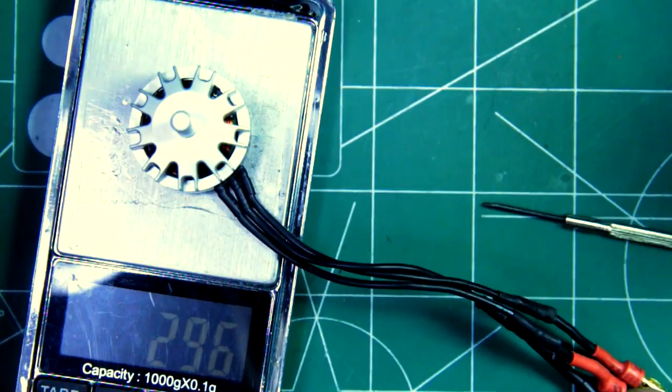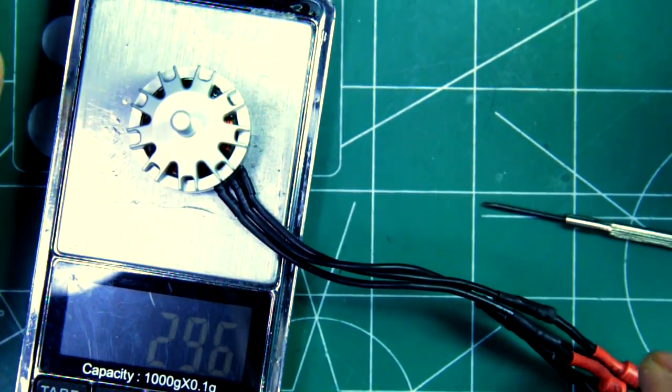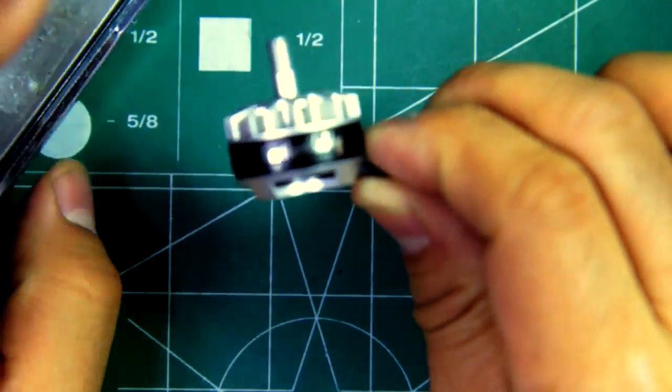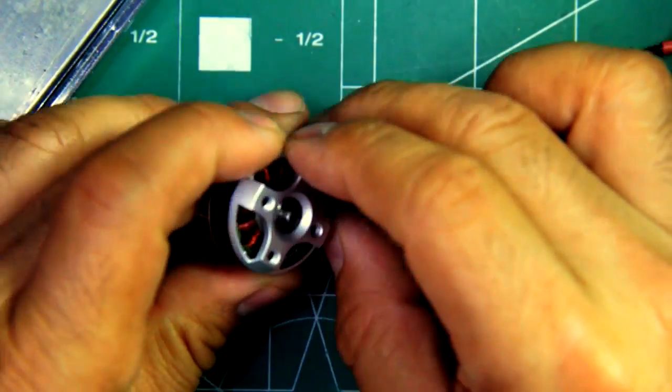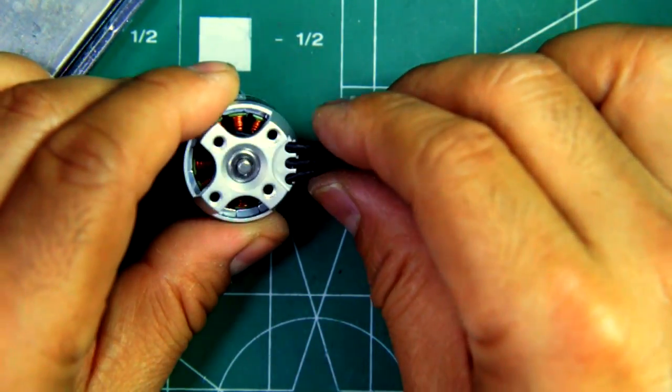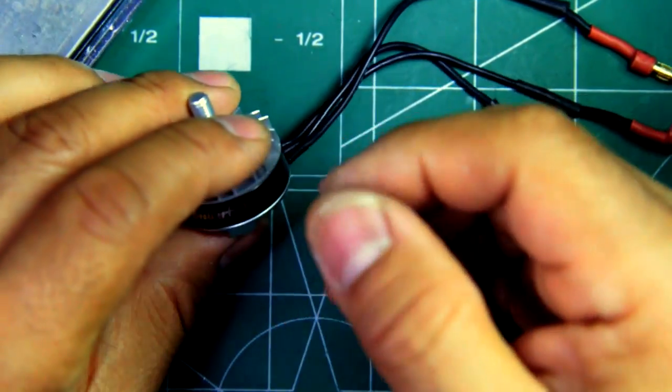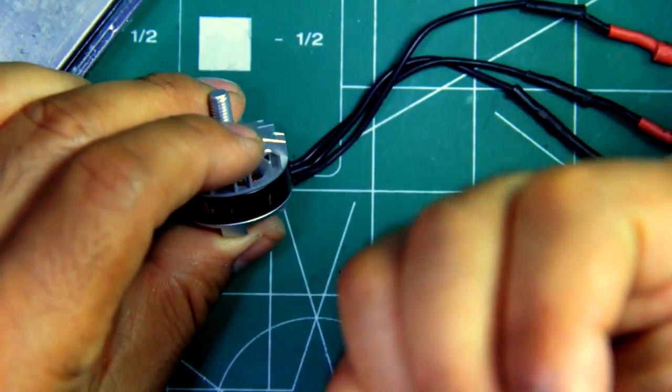It's about 30 grams for the motor, so pretty standard for this size motor, about 29, 29.5 grams or so. That's pretty standard. Well, that's an overview of the motor, so now let's see what this puppy can do on the thrust stand, so that's coming up next.